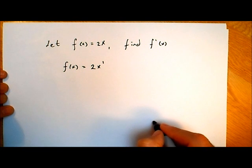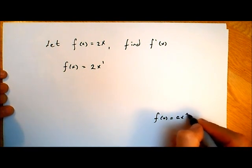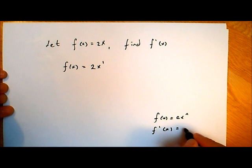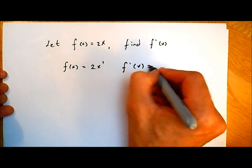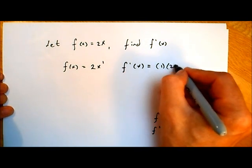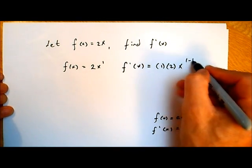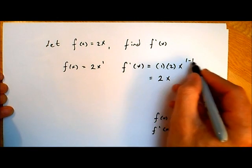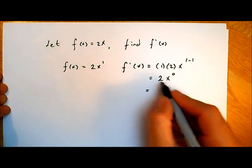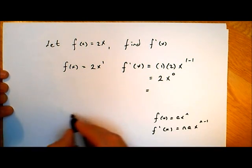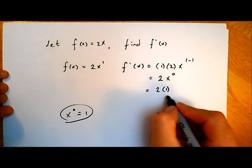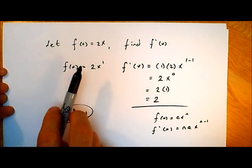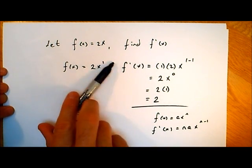If f of x is equal to ax to the power of n, then f dash of x equals n times ax to the power of n minus 1. This time n is 1 and a is 2, so f dash of x will equal 1 times 2 times x to the power of 1 minus 1. 1 times 2 is 2, and x to the power of 0 — remember, anything to the power of 0 is 1 — so we get 2 times 1, which is 2. So when f of x equals 2x, f dash of x equals 2.